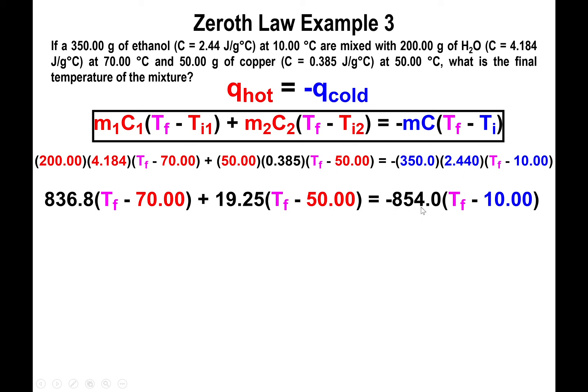All right, now here you can go many different ways about solving the problem. The way that I decided to do it is to divide every single term by 836.8. That basically allows me to end up with T_f minus 70 by itself. Then you have 19.25 divided by 836.8 yields 0.023, and negative 854 divided by 836.8 gives negative 1.021 multiplying T_f minus 10 degrees Celsius.